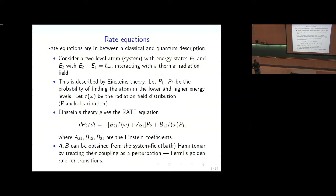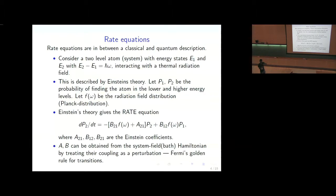Let me talk about rate equations. If you have a two-level atom with energy states E1 and E2, with energy difference ℏω, and this atom is in a thermal radiation field — this is something Einstein studied when he talked about his theory of stimulated emission — you can ask what are the probabilities of finding the system in level one and level two, and how these probabilities change when you suddenly put the system in a thermal bath.